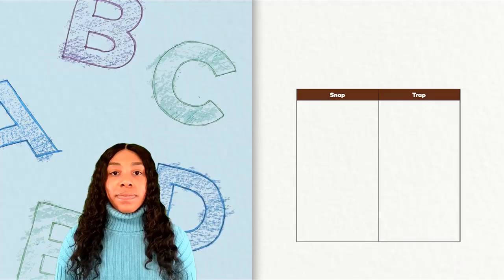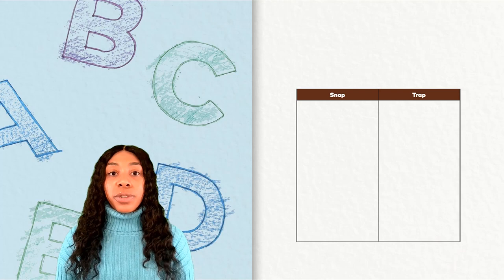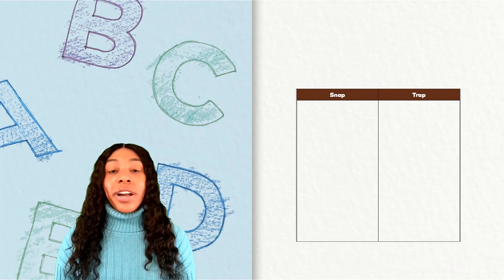It's time for us to look at some high frequency words and add them to our snap or track chart. Remember, we put words that play fair or follow the rules in the snap column, and words that don't play fair or are not spelled as we would expect in the track column.